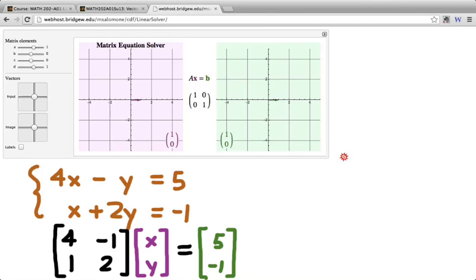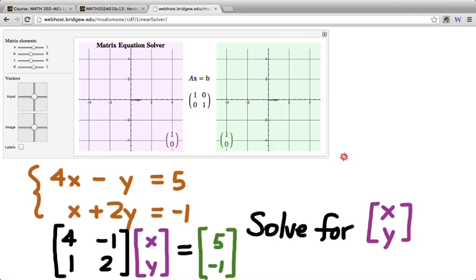So our goal now is to solve this linear system. Solve it for, and again, we can think of it as a linear system, but really, we're thinking of it as a single equation. And I'm going to solve it for this vector x, y, which we're going to call the vector x. There's the plan. So now let's implement that plan. And to do that, I'm going to set up this app to have the matrix 4, negative 1, 1, 2 in it.